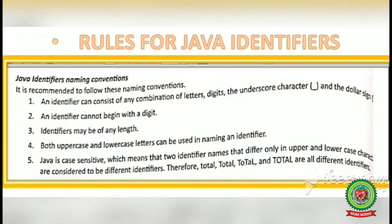Rule 2: An identifier cannot begin with a digit — you can't start an identifier with a number. For example, writing '1calculation' is wrong because it starts with a digit. Rule 3: An identifier may be of any length, meaning you can take a long name as an identifier.